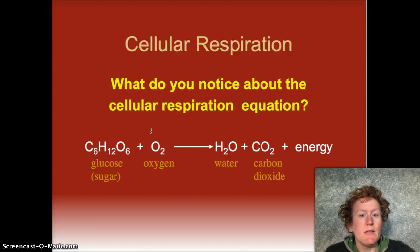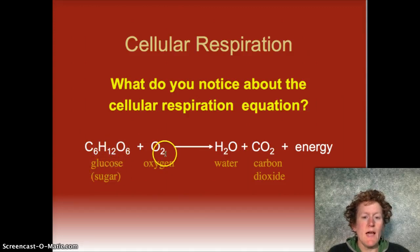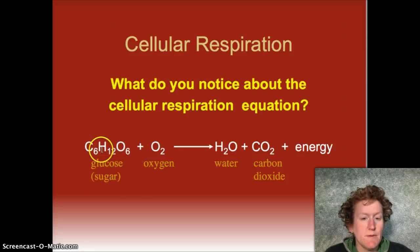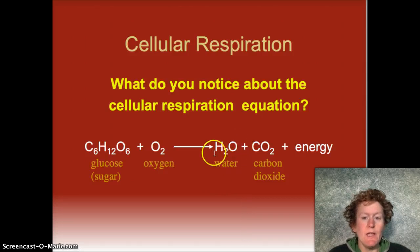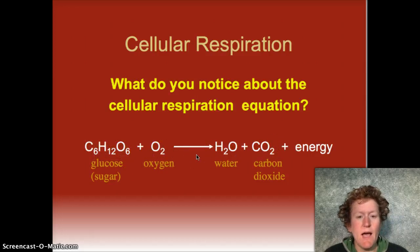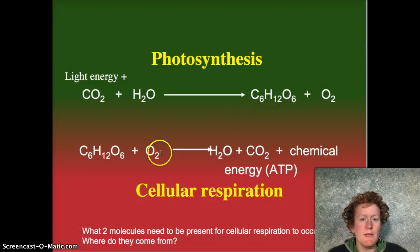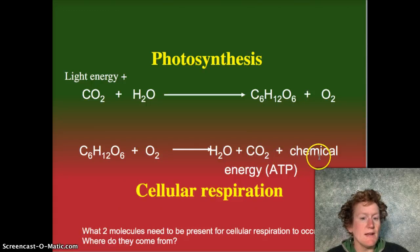Cellular respiration is what happens when organisms break down glucose for energy. Here's the glucose and here's oxygen — they're the reactants at the beginning of the reaction. At the end of the cellular respiration equation, there's water, carbon dioxide, plus energy for the organism. Photosynthesis starts with carbon dioxide and water; however, cellular respiration ends with water and carbon dioxide, plus energy as a product.